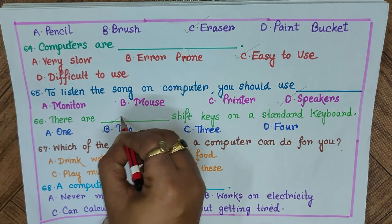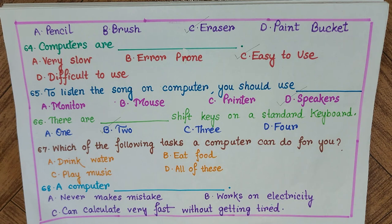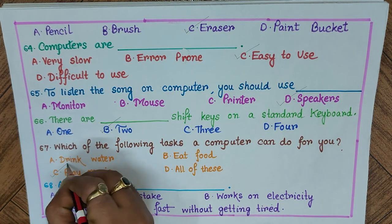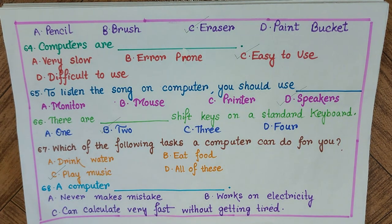Question 66: There are how many shift keys on a standard keyboard? A) 1, B) 2, C) 3, D) 4. The answer is B) 2. Question 67: Which of the following tasks can a computer do for you? A) drinking water, B) eat food, C) play music, D) all of these. The answer is C) play music.